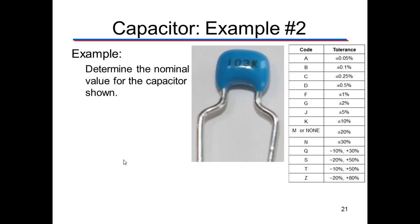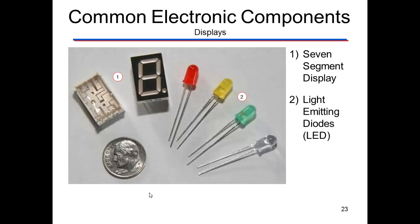Now this is a Mylar capacitor and it works the same way. So this is 1, 0, and then three zeros — 1, 2, 3. So this is 10,000 picofarads, K plus or minus 10%.